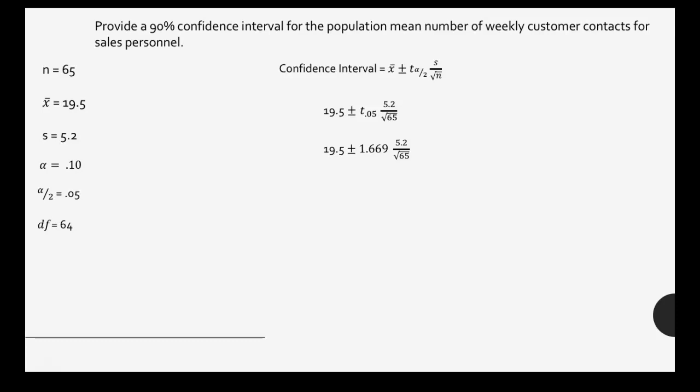We multiply that t-score by our standard error and find our margin of error to be 1.076. Then we do 19.5 plus and minus our margin of error, giving us a confidence interval of 18.424 to 20.576. So we're 90% confident that our sales personnel made contact with between 18.424 and 20.576 customers per week.